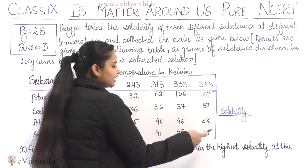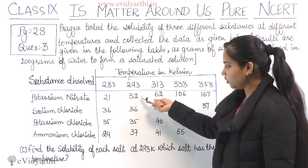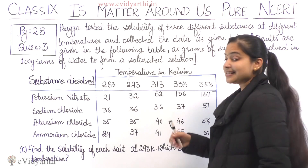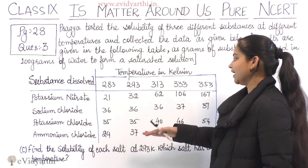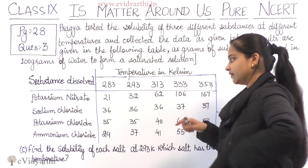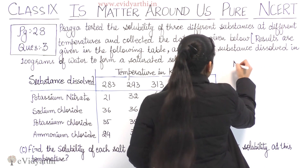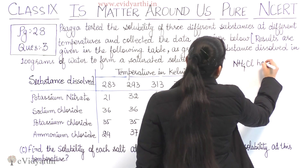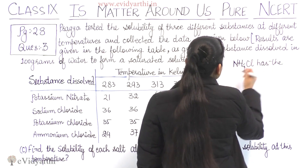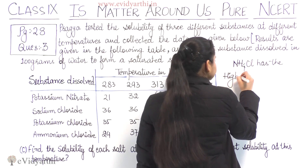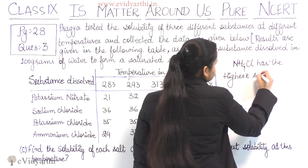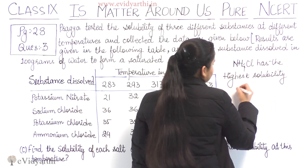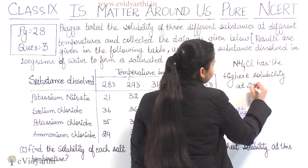Which salt has the highest solubility at 293 Kelvin? Comparing the values — 32, 36, 35, 37 — ammonium chloride has the highest solubility at this temperature. That means NH₄Cl has the highest solubility at 293 Kelvin, requiring 37 grams to dissolve in 100 grams of water.